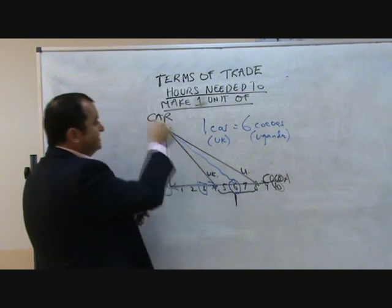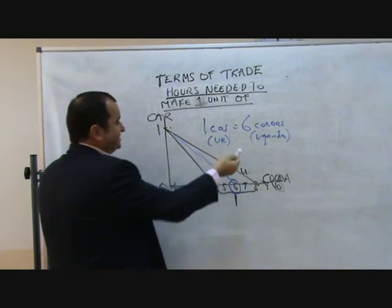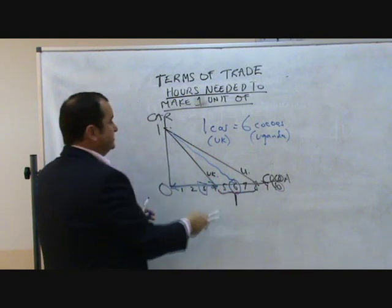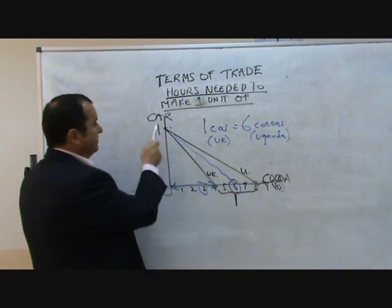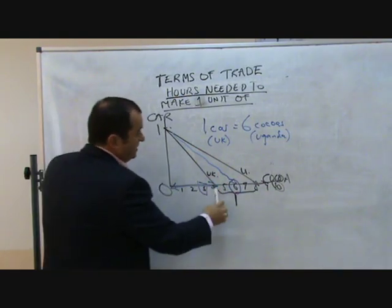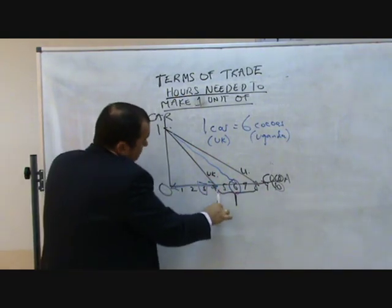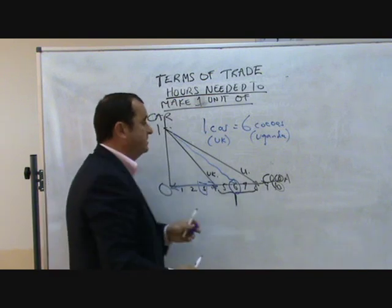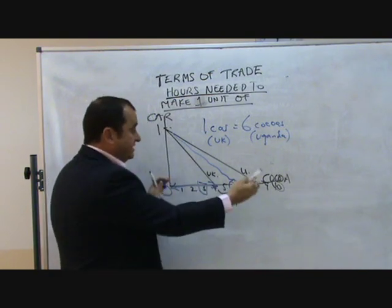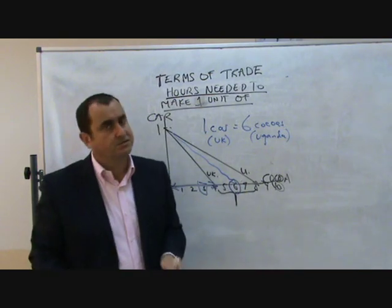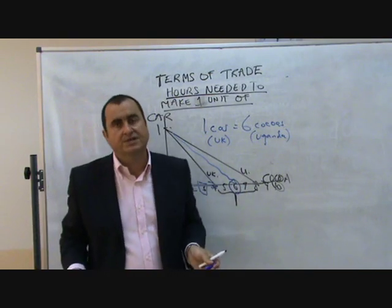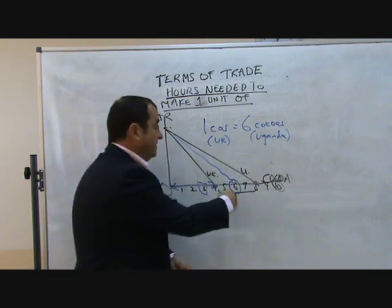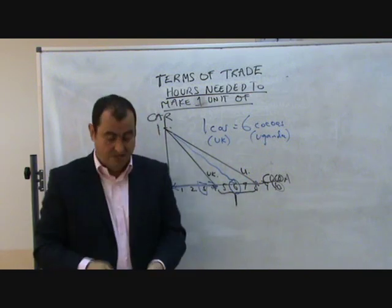If the relative price of cars to cocoa was outside of this range — in this example, outside of one car being worth between four and eight units of cocoa — one of the two countries would not be willing to trade. The terms of trade, for trade to happen, have to lie in that range.